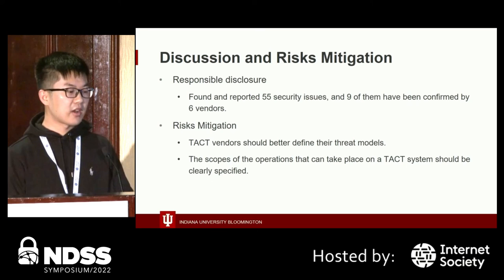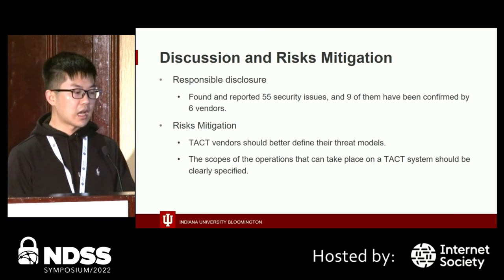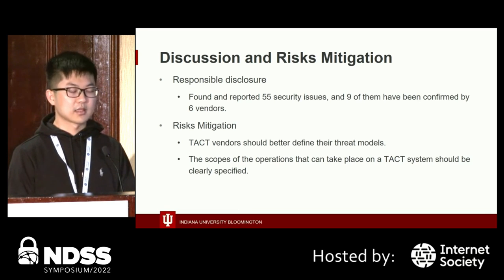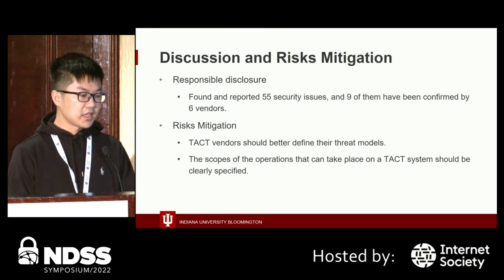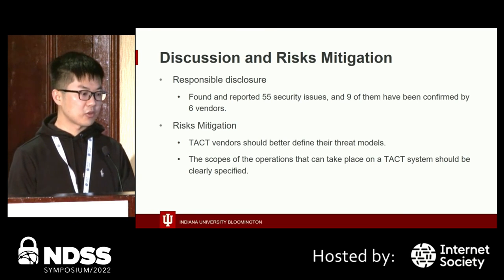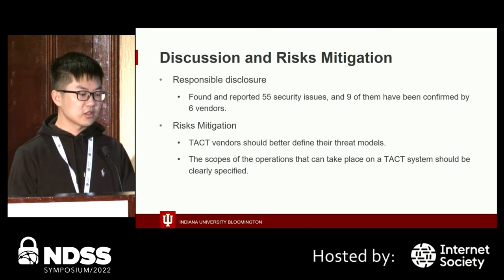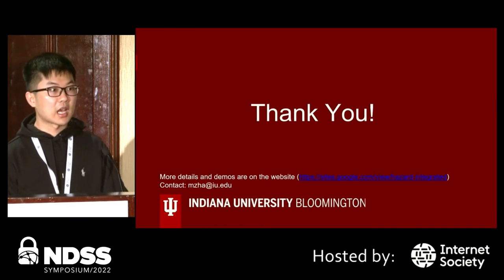Finally, we found and reported 55 security issues in total, and 9 of them have been confirmed by 6 vendors. We also provide suggestions for risk mitigations, such as that team chat systems should better define their threat model, and clearly specify the scope of operations that can take place on a team chat system. Thank you for your time.